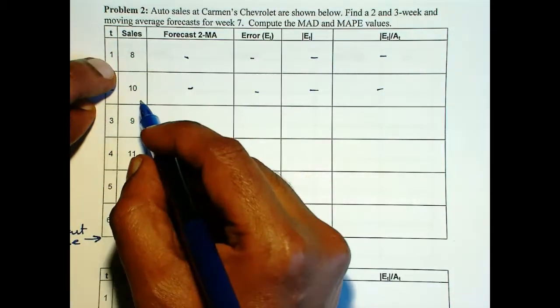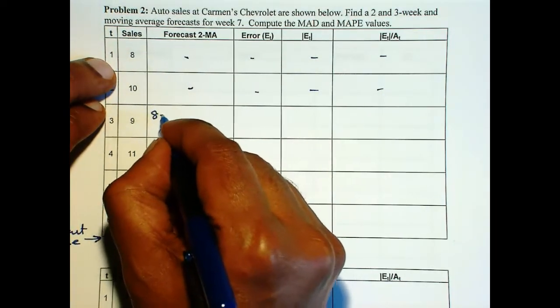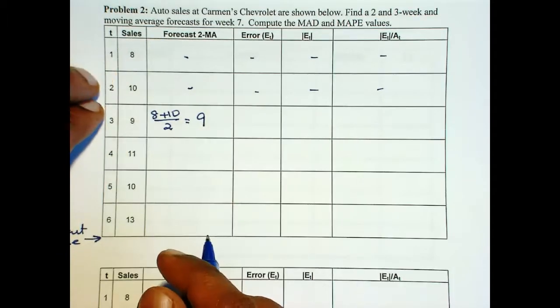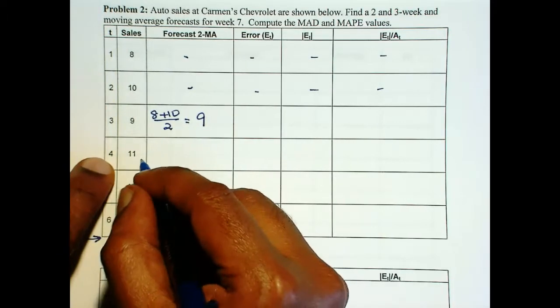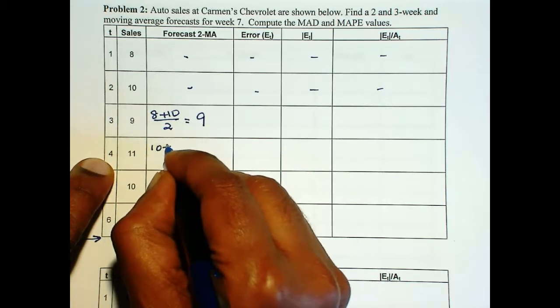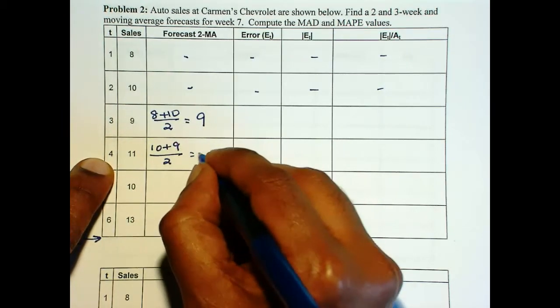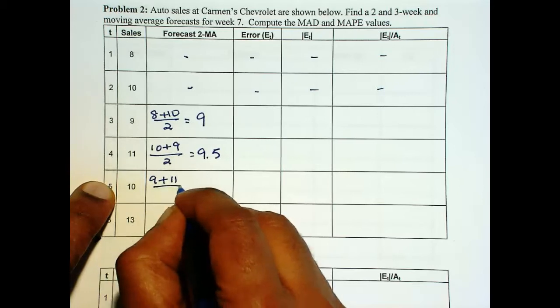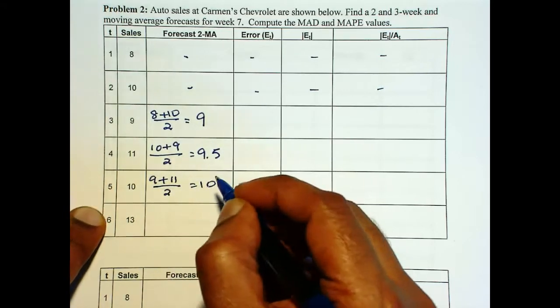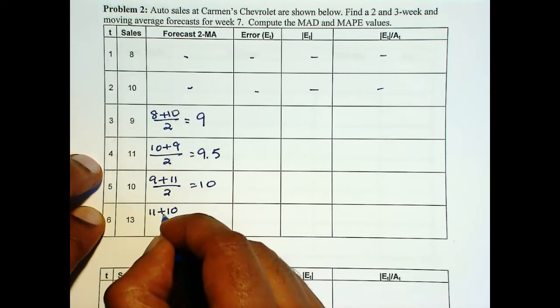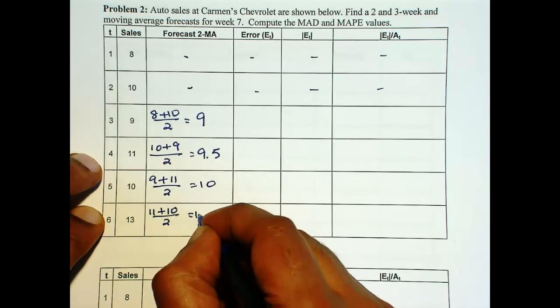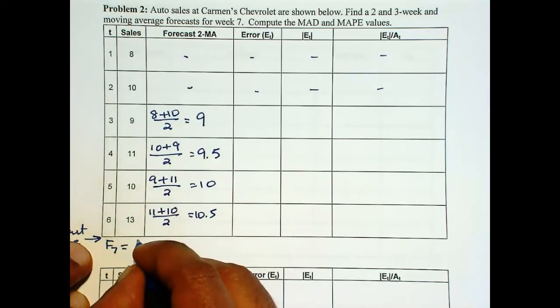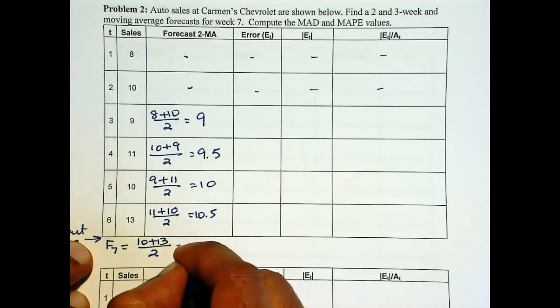Now the average of these two numbers, so 8 plus 10 over 2, and that is the forecast for period number 3. So here for 4 is 10 plus 9 over 2, that is 9.5. Then 9 plus 11 over 2 is 10. Then 11 plus 10 over 2 is 10.5. So F7 then is 10 plus 13 over 2 is 11.5.